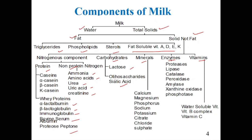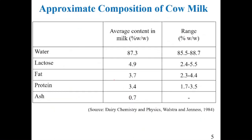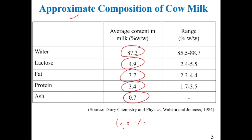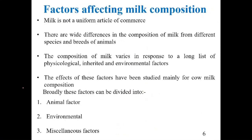This is how we can categorize the different components of milk. Looking at the average approximate composition of cow milk: water is around 87.3%, lactose is 4.9%, fat is 3.7%, protein is 3.4%, and ash is 0.7%, totaling approximately 100%.